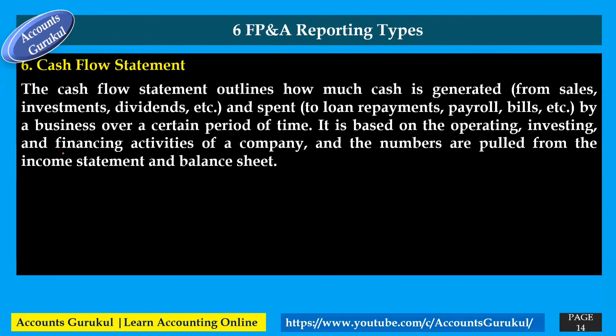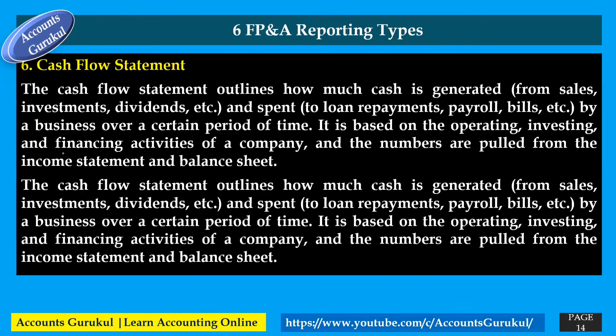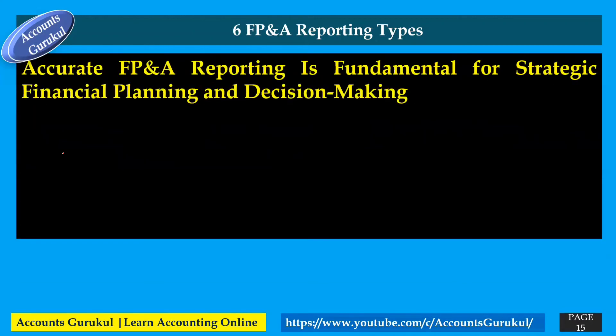The sixth and final report type is the cash flow statement. It outlines how much cash is generated from sales, investments, and dividends, and how much is spent on loan repayments, payroll, and bills over a certain period of time. It is based on the operating, investing, and financing activities of a company, and the numbers are pulled from both the income statement and balance sheet.